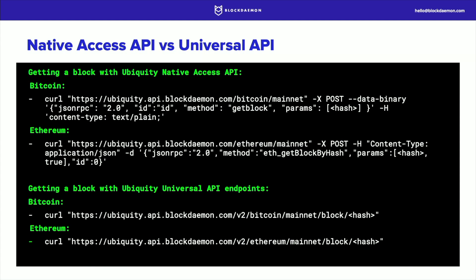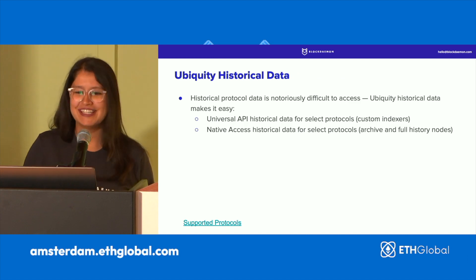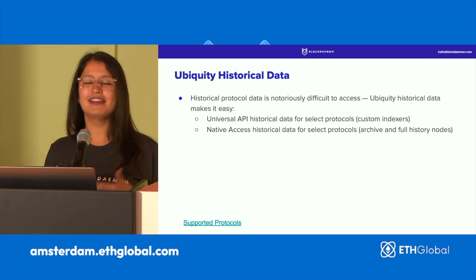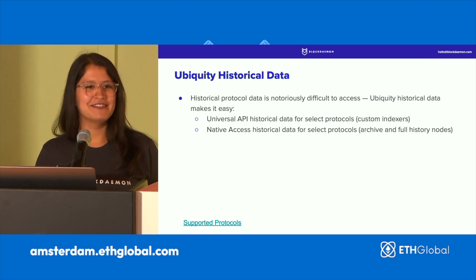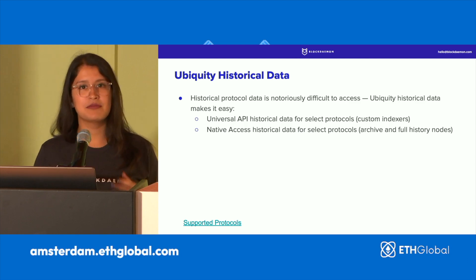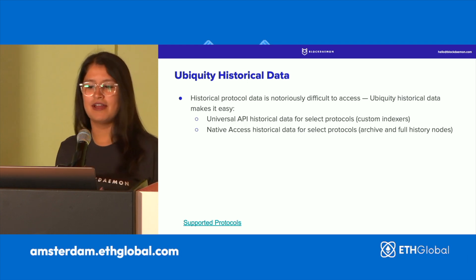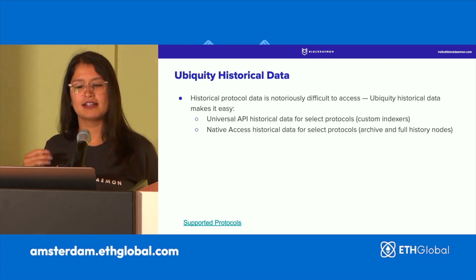Here is a sample of what the native access API looks like versus what the universal API looks like. Regardless of what function you're using, it still looks the same — very similar commands across the board. For more information on commands, use cases, and technical specs, you can go to blockdaemon.com and look for our Ubiquity docs and guides. Our historical data protocol makes it easy across some protocols to do custom indexing and access archive and full history nodes with the universal API and native access historical data function.